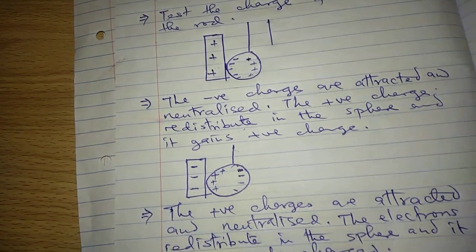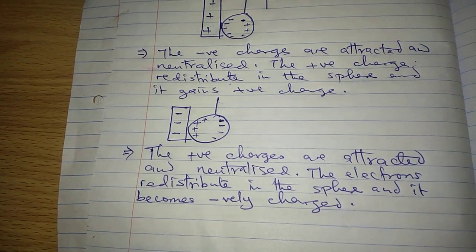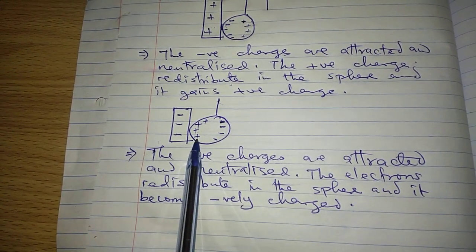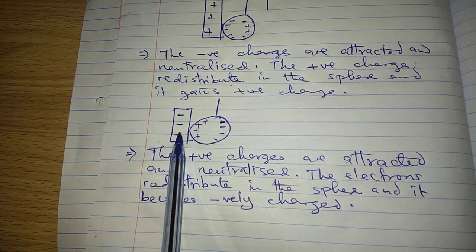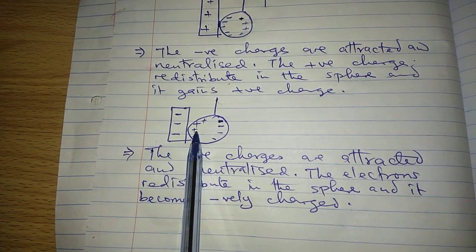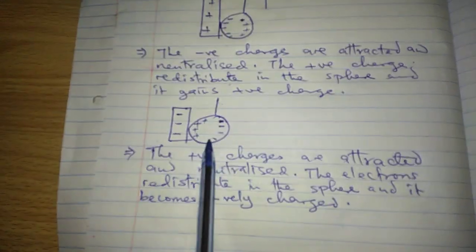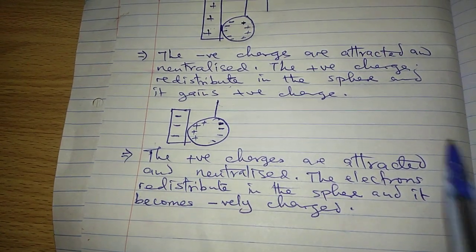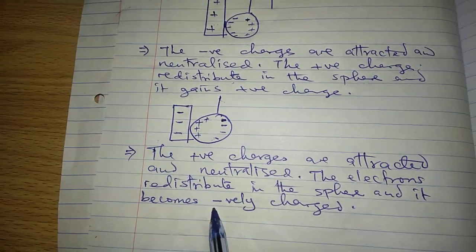So the sphere gains a general negative charge because the positive charges have been attracted by the negative rod, and because of the contact they get neutralized. Once they are neutralized and the rod is withdrawn, the negative electrons will redistribute themselves and at the end of the day the sphere will be negatively charged.